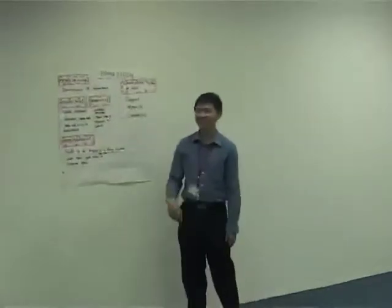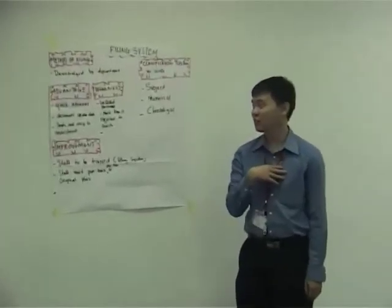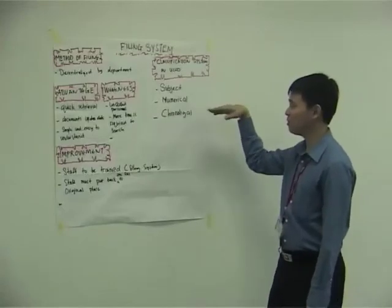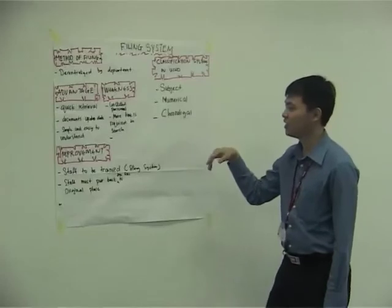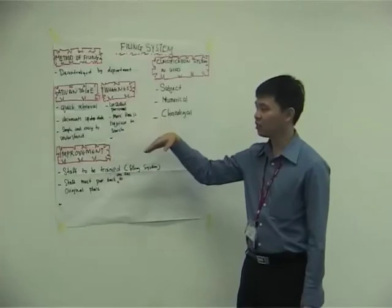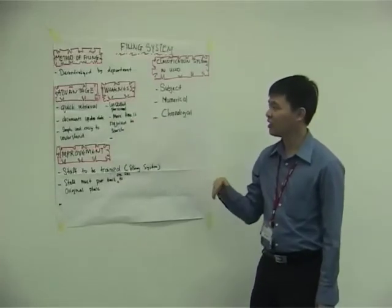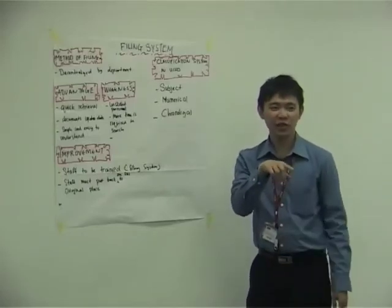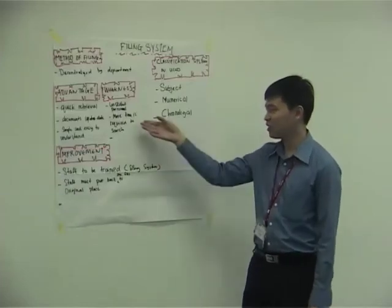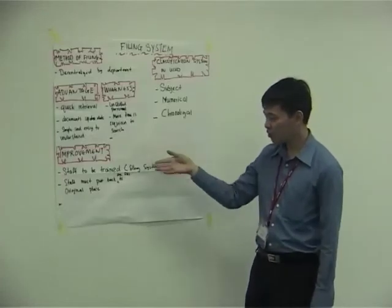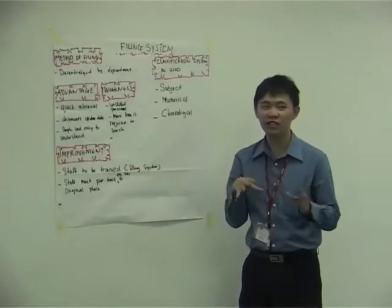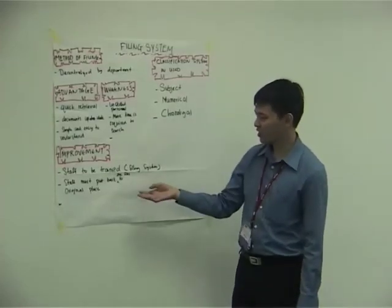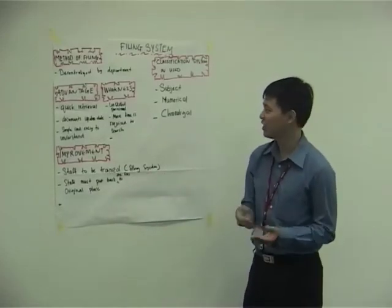Hi everyone. I'm from the department of soft skills, and our department uses a decentralized system, as every department is also decentralized. The classification system is numerical, subject, and also chronological. The advantages: you can retrieve documents quickly, it's up to date, simple and easy to understand. The disadvantage or weakness would be unskilled personnel — if you're unskilled, it will take a lot of time to search for the right number and the right subject. Sometimes it may take some time to search as there are lots of numbers. The improvement would be for staff to be trained and to be very familiar with the filing system so you can get the right file quickly. Staff must also put back the file to the original places.